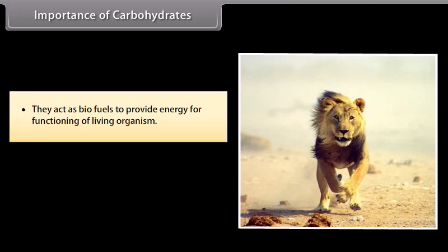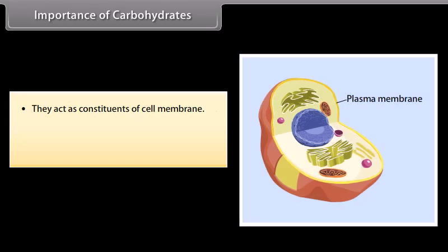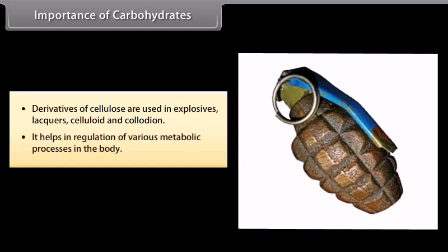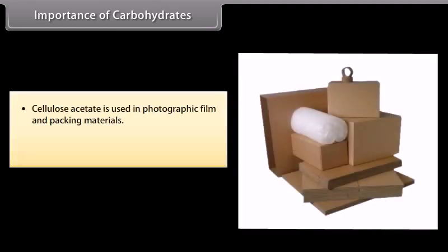Importance of carbohydrates: They act as biofuels to provide energy for the functioning of living organisms. They act as constituents of the cell membrane and help in breakdown of fatty acids, preventing ketosis. Derivatives of cellulose are used in explosives, lacquers, celluloid, and collodion. They help in regulation of various metabolic processes. Cellulose acetate is used in photographic film and packing materials. Starch is the storage form of food in plants.